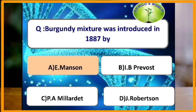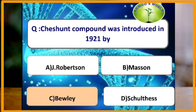Burgundy mixture was introduced in the year 1887 by which scientist? The composition of Burgundy mixture is sodium carbonate, copper sulfate, and water in the ratio of 1:1:100, and it was introduced by Manson.